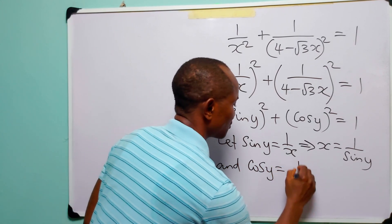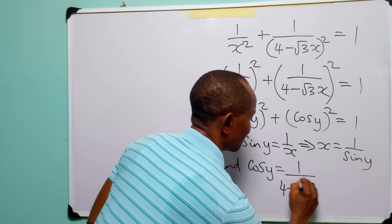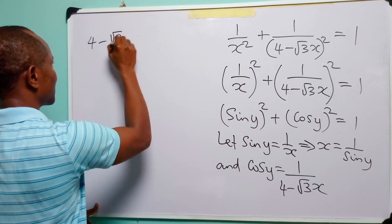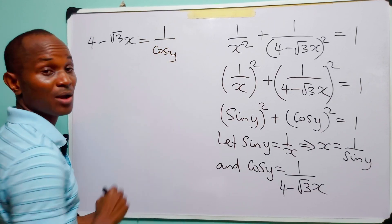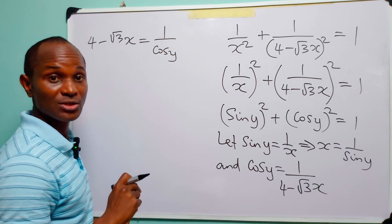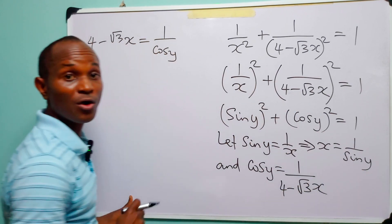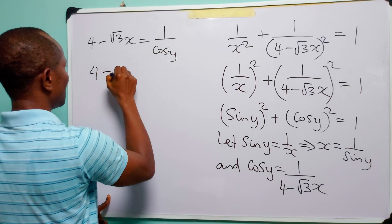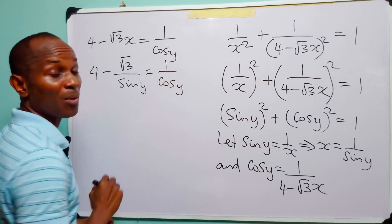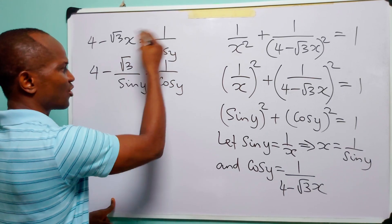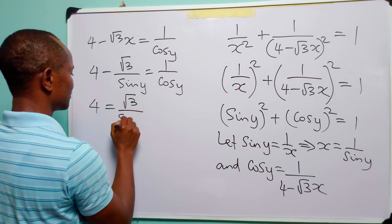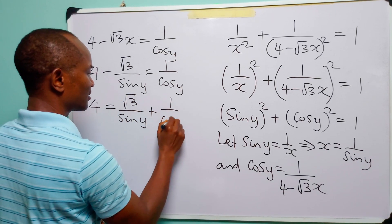And let cos y be equal to one over four minus root three x. From here we have that four minus root three x is equal to one over cos y. But we have already established that x is equal to one over sine y. The next step is to move this quantity over to the right hand side of the equation. When we do that we have four is equal to root three over sine y plus one over cos y.